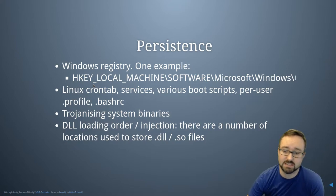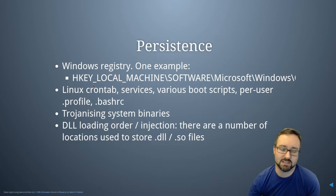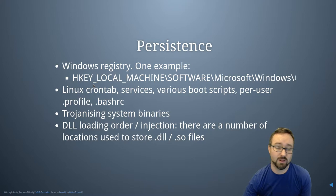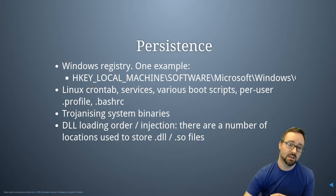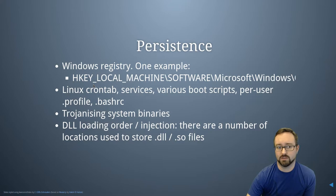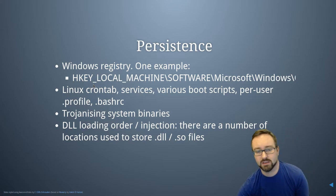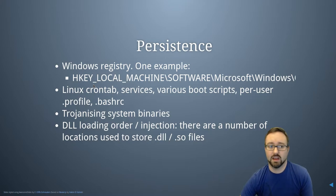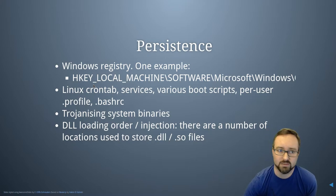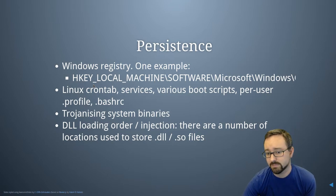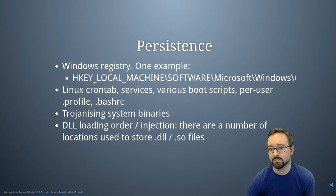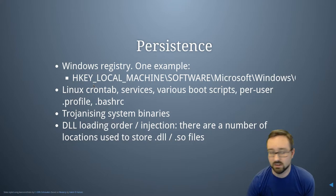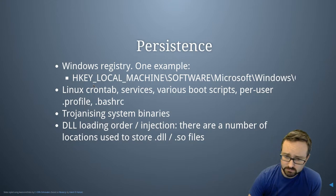Another way of persisting is by trojanizing system binaries — that's how user-space rootkits work, by replacing executables on disk. For example, replacing the ps command that normally lists processes with a version that hides other malware running on the system. Trojanized binaries also give a way to start when a computer boots if those binaries are part of the boot process.